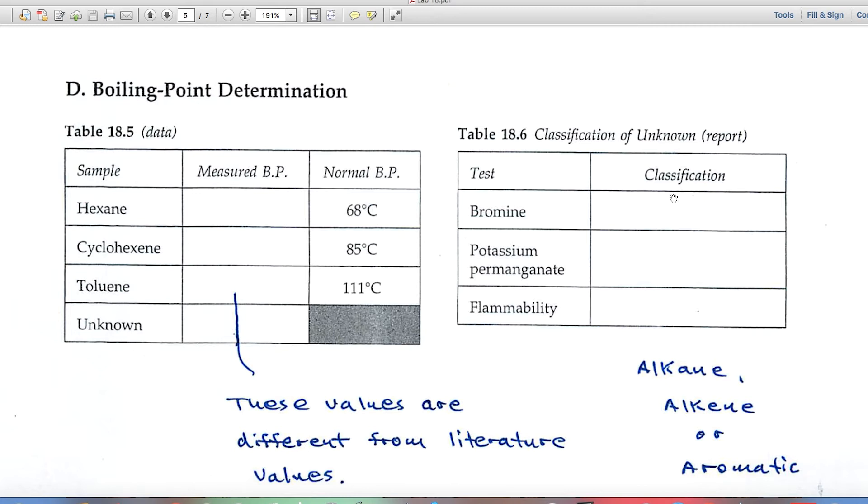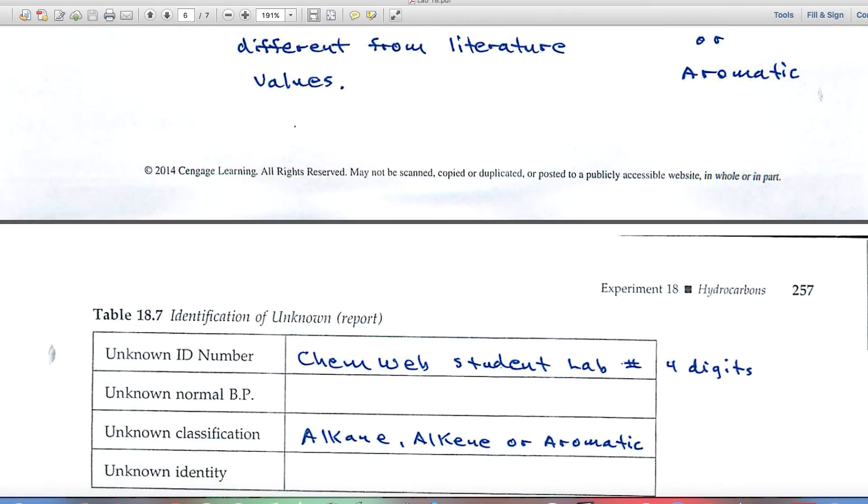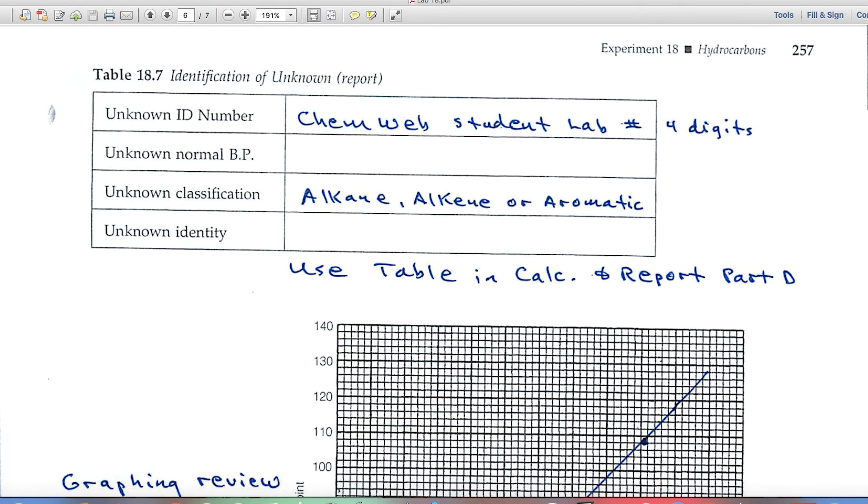Over on the right hand side is a classification now of your unknown. What did the bromine test indicate? Is your unknown an alkane, alkene, or an aromatic? The same with potassium permanganate and the same with flammability. So after you conclude this table 18.6, you should really have an idea of which of those three classes your unknown is in.